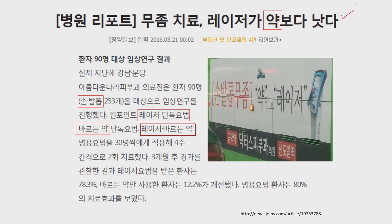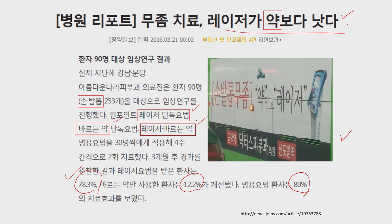Another example I took from a newspaper — a bus wrapping advertisement — shows three groups for athlete's foot patients: laser monotherapy, ointment, and the combination of laser and ointment. After three months, 78.3% of the laser mono group, 12.2% of the ointment group, and 80% of the combination group showed effectiveness. So the advertisement says laser is important — rather than treating with ointment alone, you should go for laser. That is the copy of this advertisement.